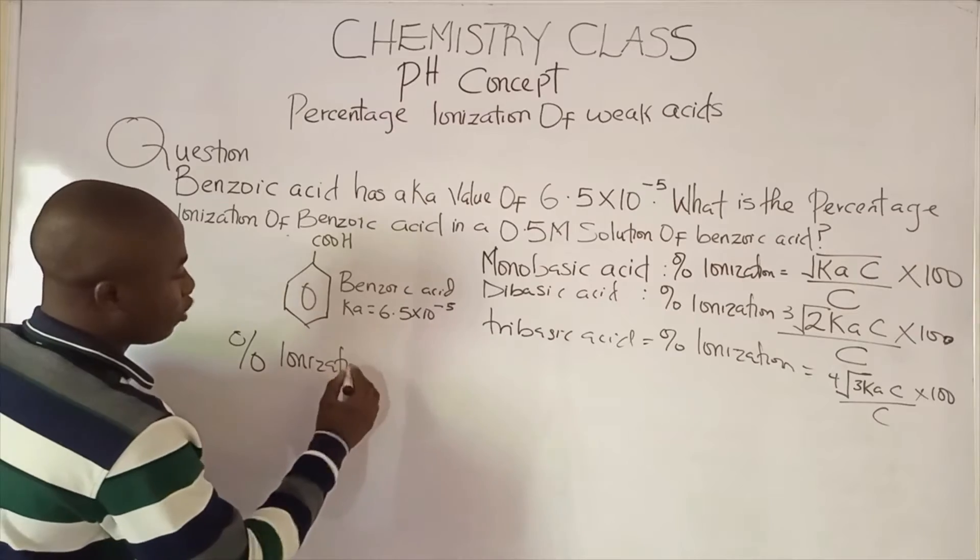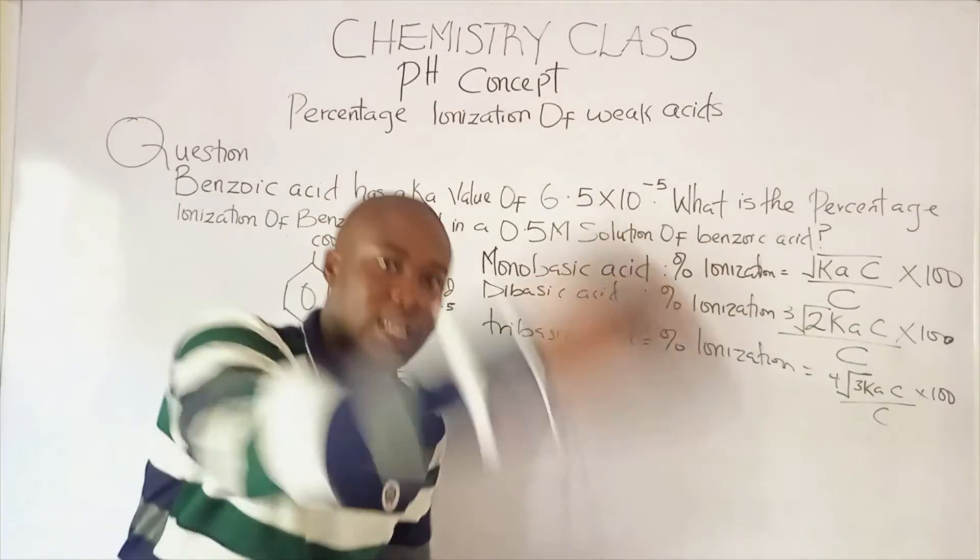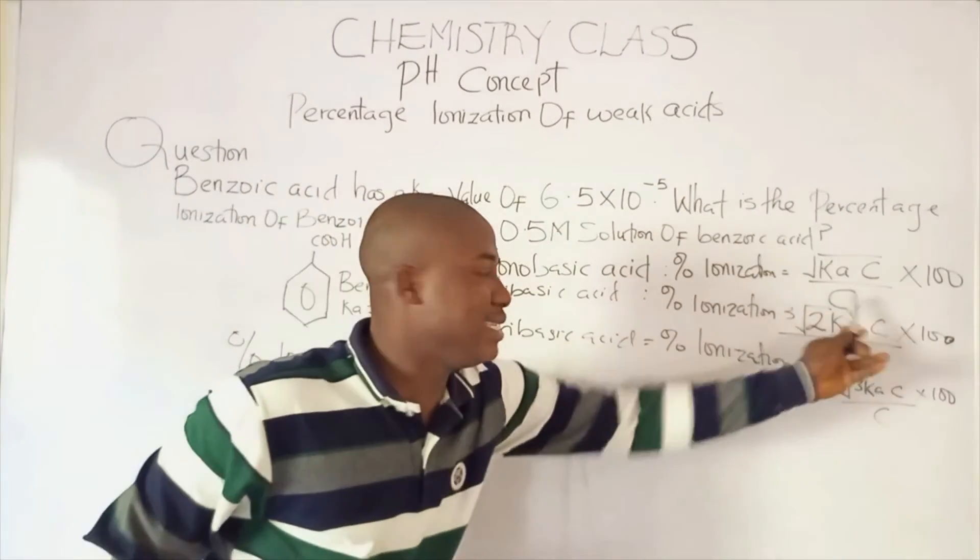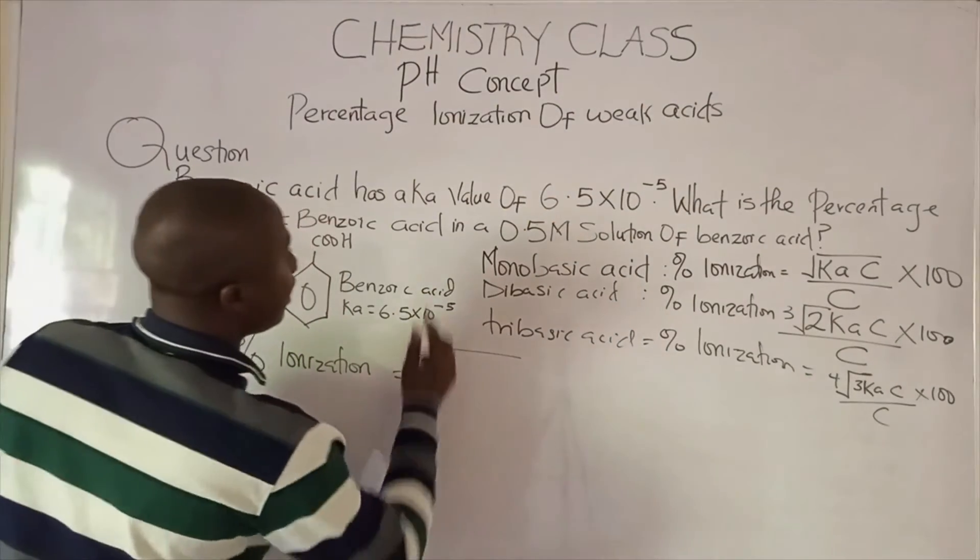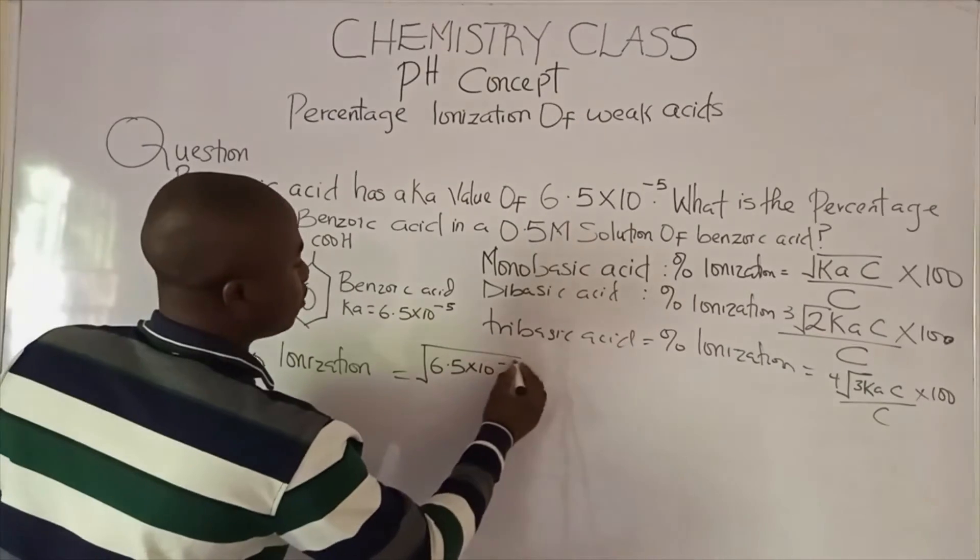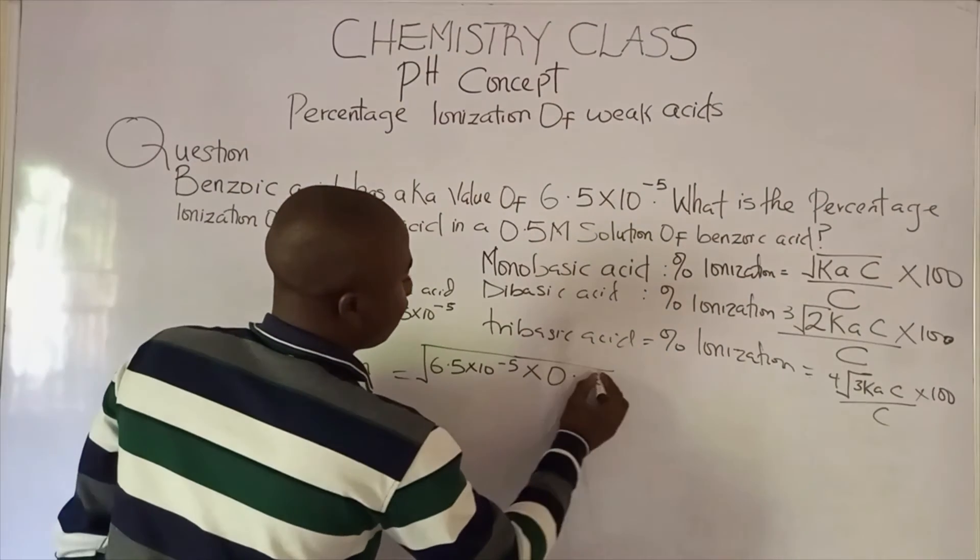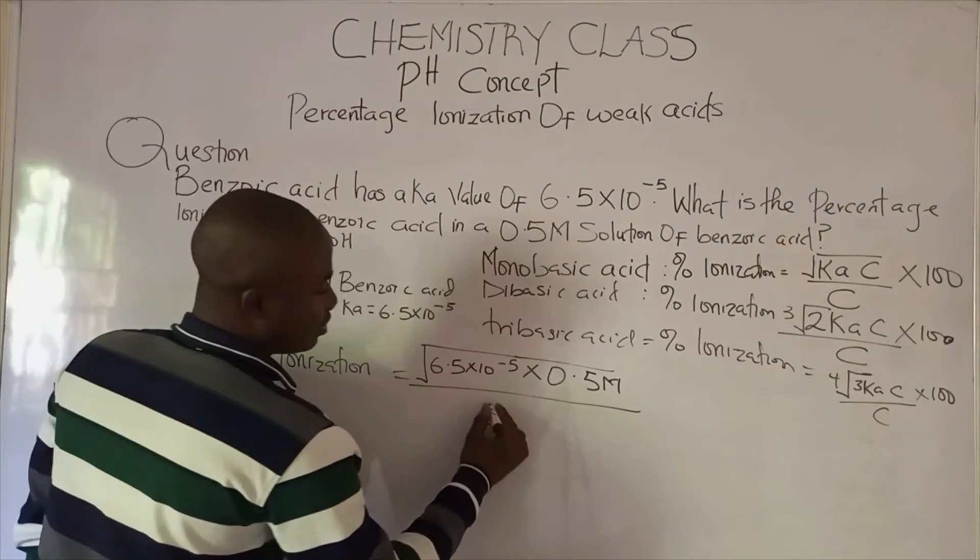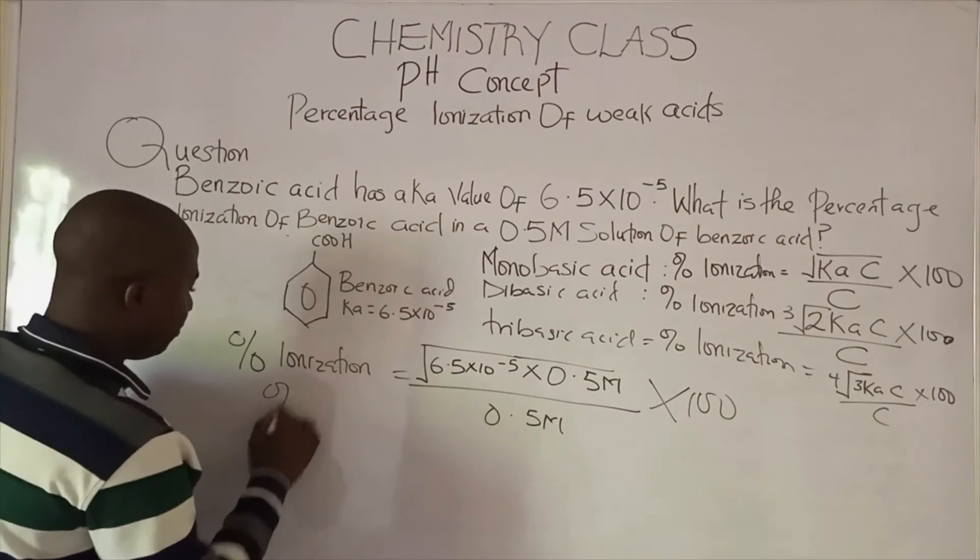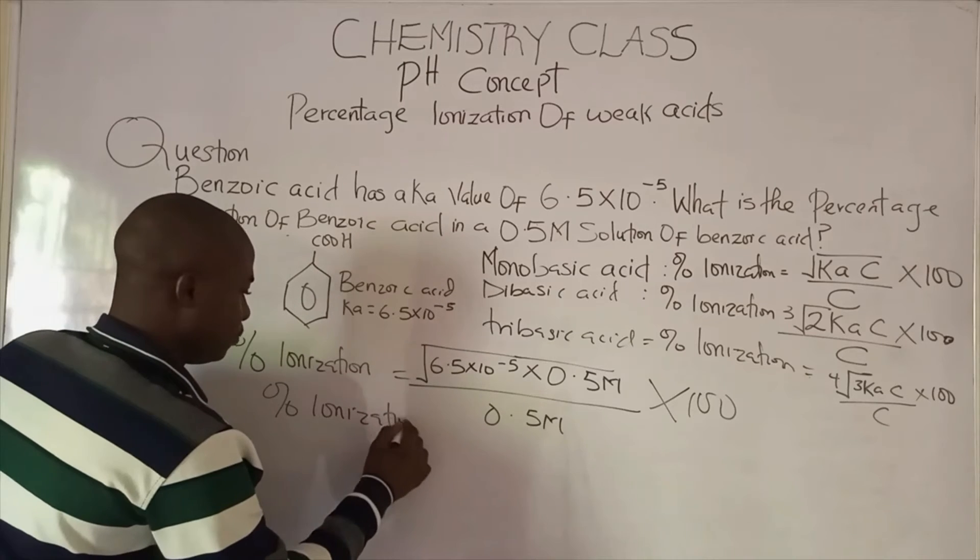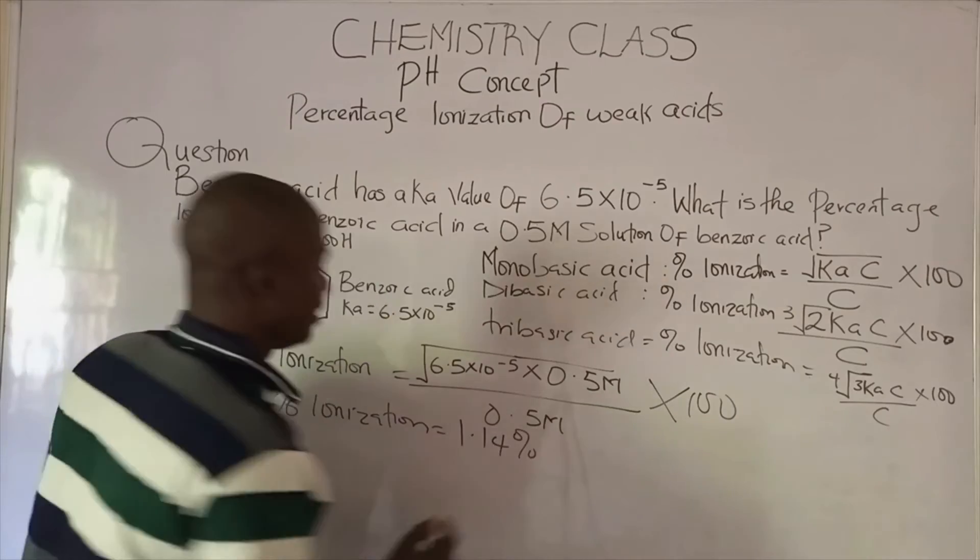Ka is called the acid dissociation constant and c is simply the concentration. So percentage ionization becomes the square root of Ka, which is 6.5 times 10 to the minus 5, times c, which is 0.5 molar, all over 0.5 molar, times 100. The percentage ionization of benzoic acid becomes 1.14 percent.